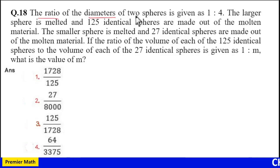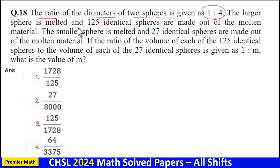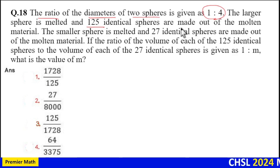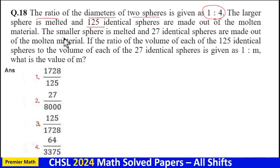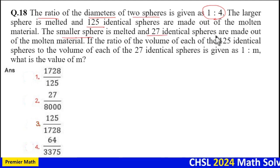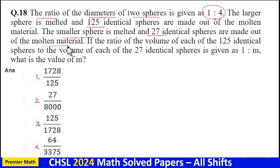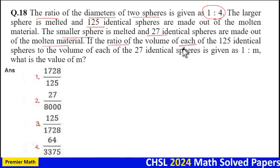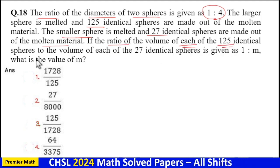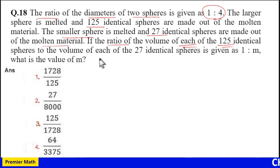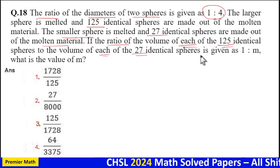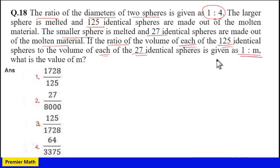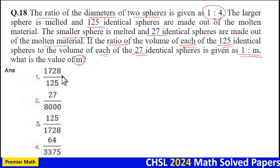The ratio of diameters of two spheres is given as 1:4. The larger sphere is melted and 125 identical spheres are made out of the molten material. The smaller sphere is melted and 27 identical spheres are made out of the molten material. If the ratio of volume of each of these 125 identical spheres to the volume of each of these 27 identical spheres is given as 1:m, what is the value of m?